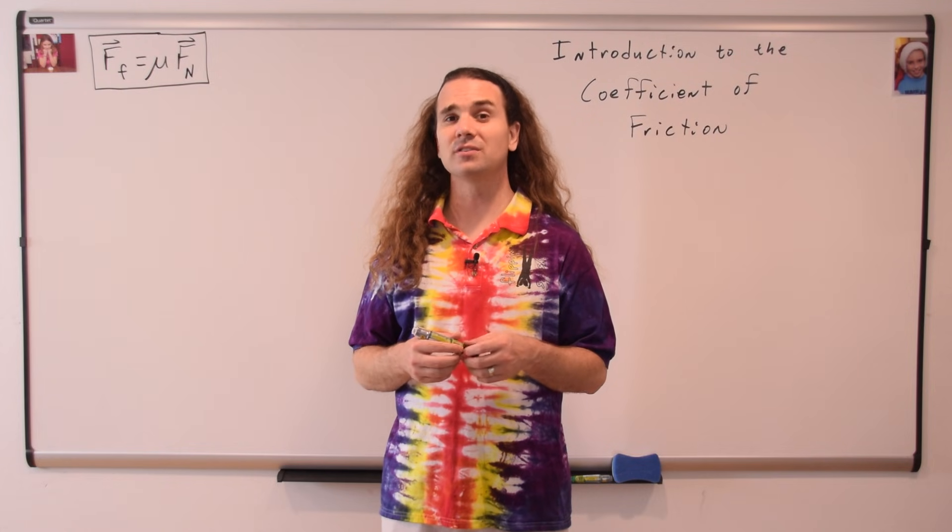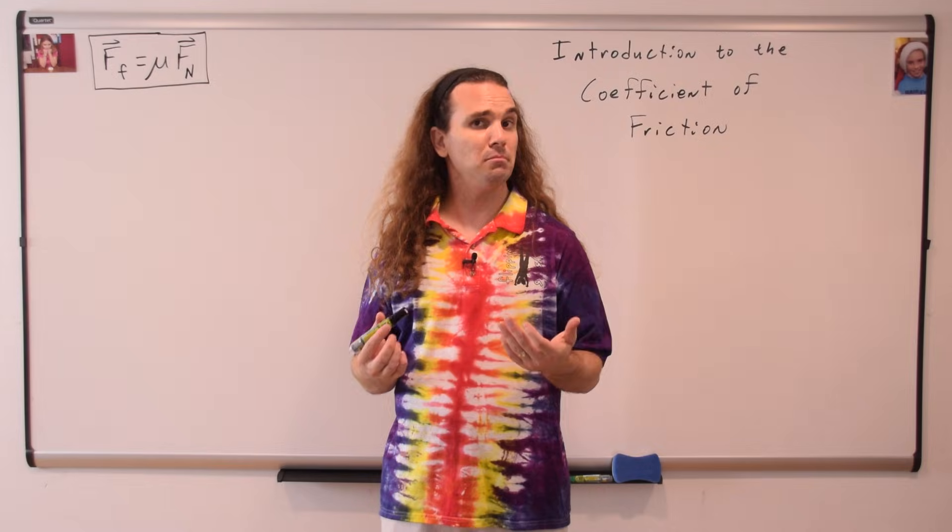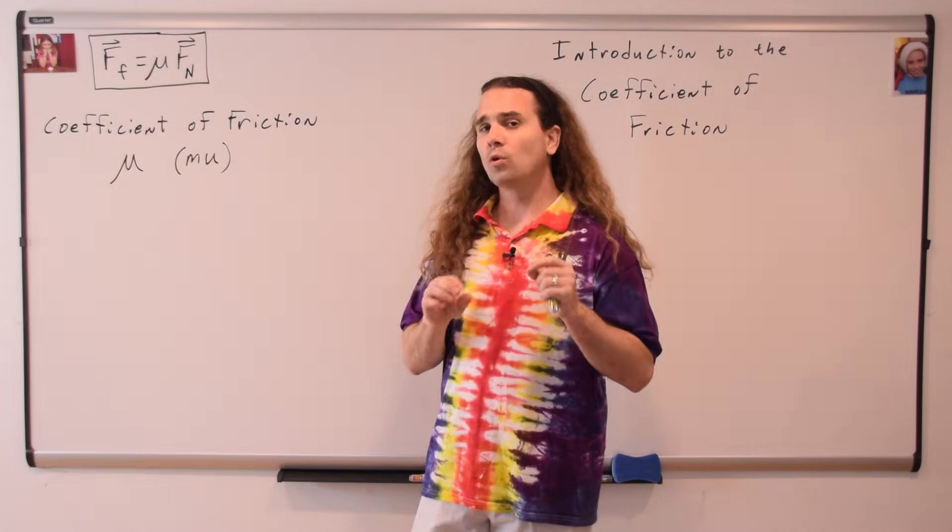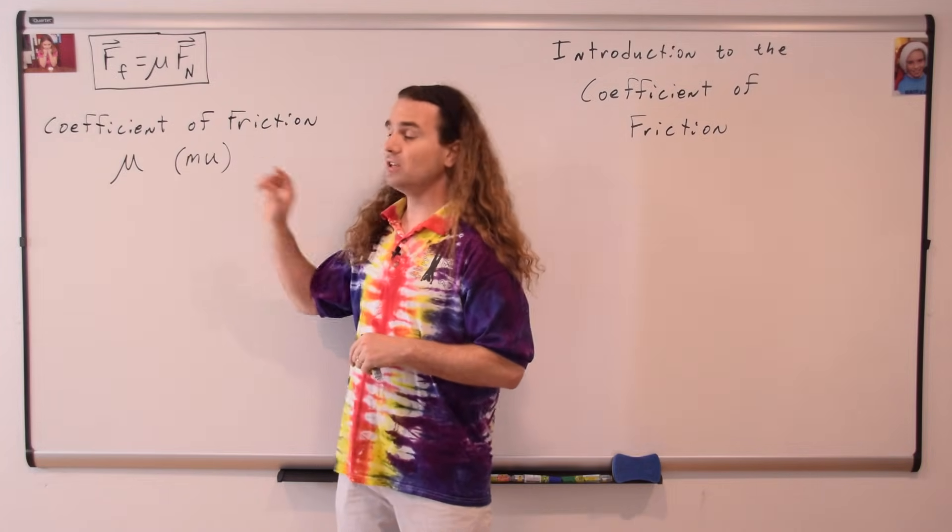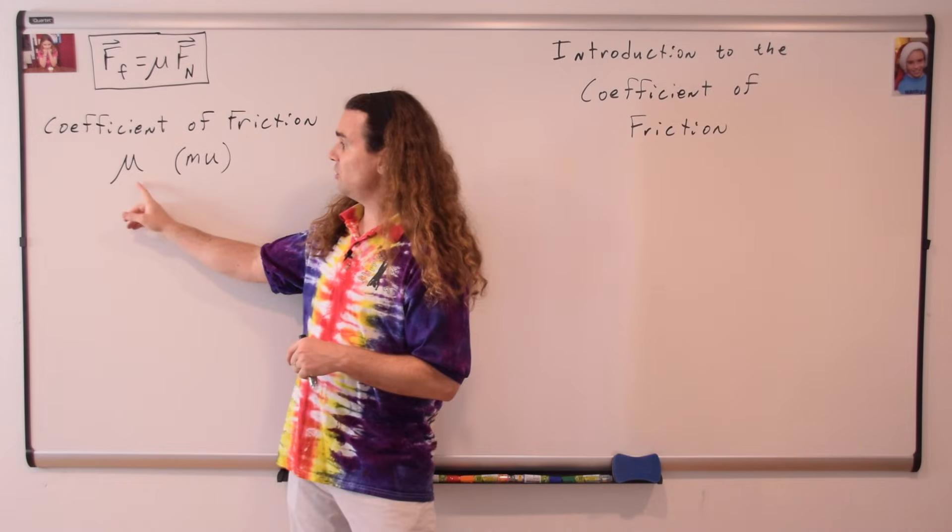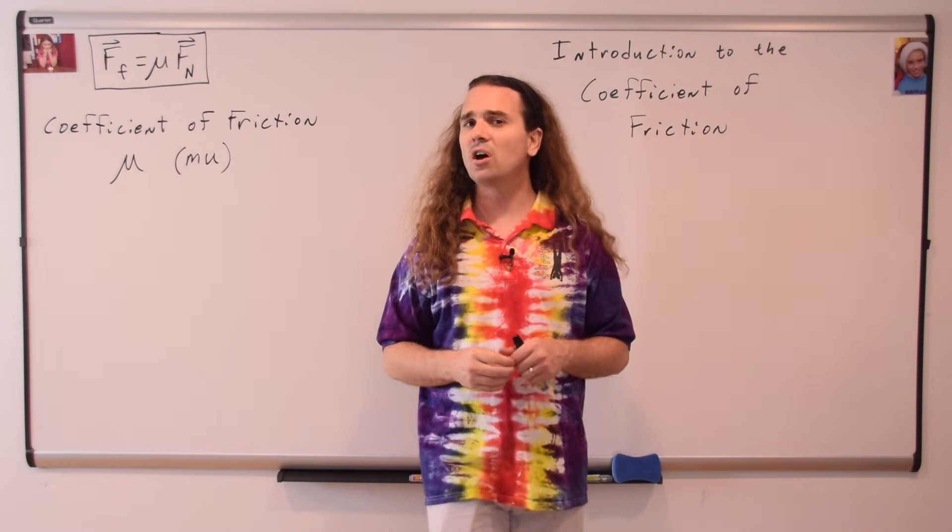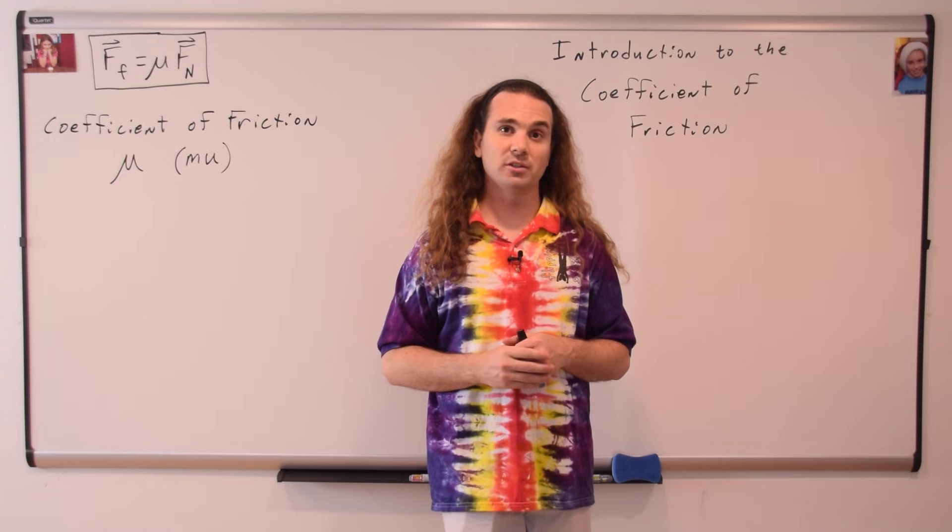The symbol for the coefficient of friction is the lowercase Greek letter mu. The word mu is spelled M-U, and the symbol looks like a U with a tail at the front. Let's solve for the units for the coefficient of friction.